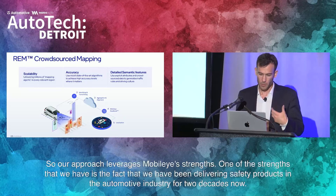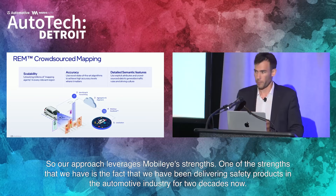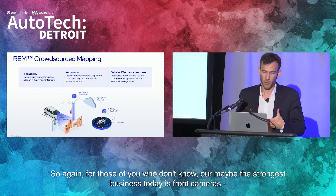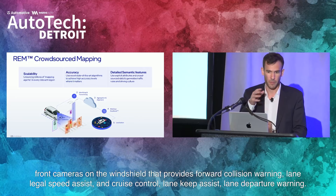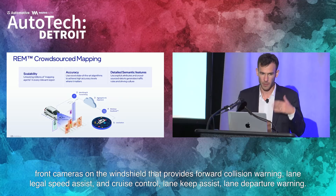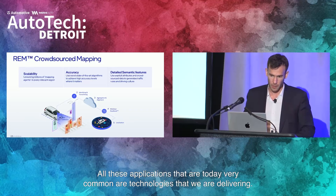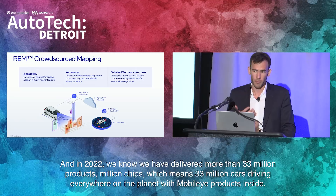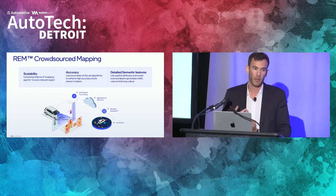Our approach leverages Mobileye's strengths. One of those strengths is the fact that we have been delivering safety products in the automotive industry for two decades. Our strongest business today is front cameras on the windshield that provide forward collision warning, lane and legal speed assist, cruise control, lane keep assist, lane departure warning — all applications that are very common today. In 2022, we delivered more than 33 million chips, meaning 33 million cars driving everywhere on the planet with Mobileye products inside.